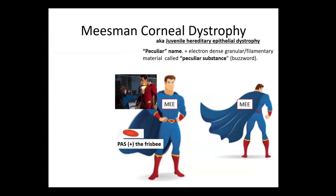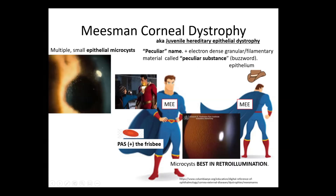The next epithelial dystrophy is Meesman. I remember a superhero whose name is Mees, and he goes by Meesman — it's a very peculiar name because on electron microscopy and histology you'll see a peculiar substance. Meesman is also known as juvenile hereditary epithelial dystrophy — it's affecting the epithelial and it is hereditary. It's common in juveniles, which is why I use Shazam as the mnemonic. It presents as small epithelial microcysts that are PAS-positive and they retro-illuminate, which is why the superhero is turning his back — you can see it best when they retro-illuminate.